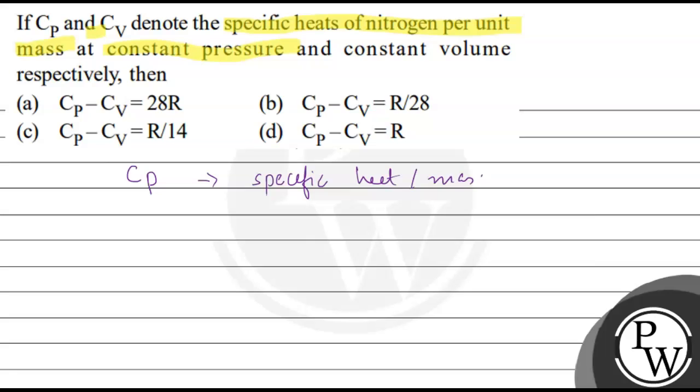Cv is at constant volume and Cp is at constant pressure, so we have to find out what the Cp minus Cv relation will be.